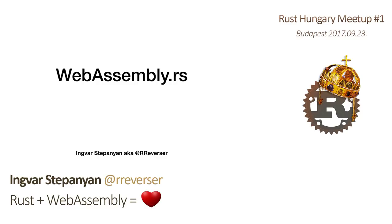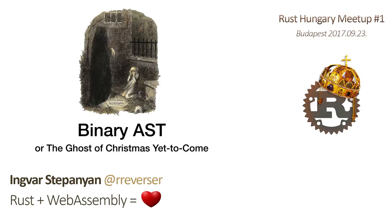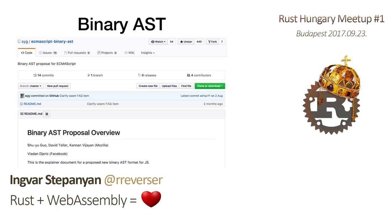So let's talk about WebAssembly. It will be in three parts — like a Christmas Carol, if you're familiar with the Dickens story. We will go slightly out of order. We will go first slightly to the future and meet Binary AST, the ghost of Christmas yet to come. Binary AST is a very recent development currently in progress by the Mozilla team.